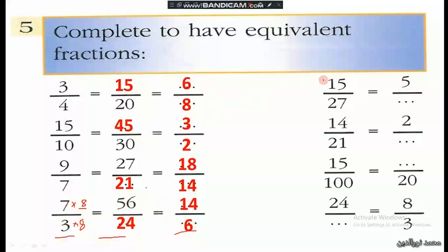Here, 15 is divided by 3 to give 5, so we also divide the other term by 3: 27 divided by 3 is 9. Then 14 becomes 2 because it's divided by 7, so we divide 21 by 7: 21 divided by 7 is 3.